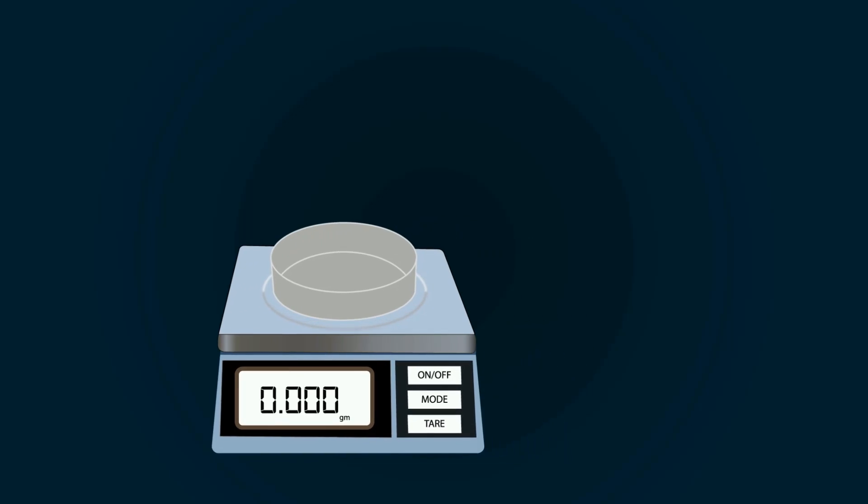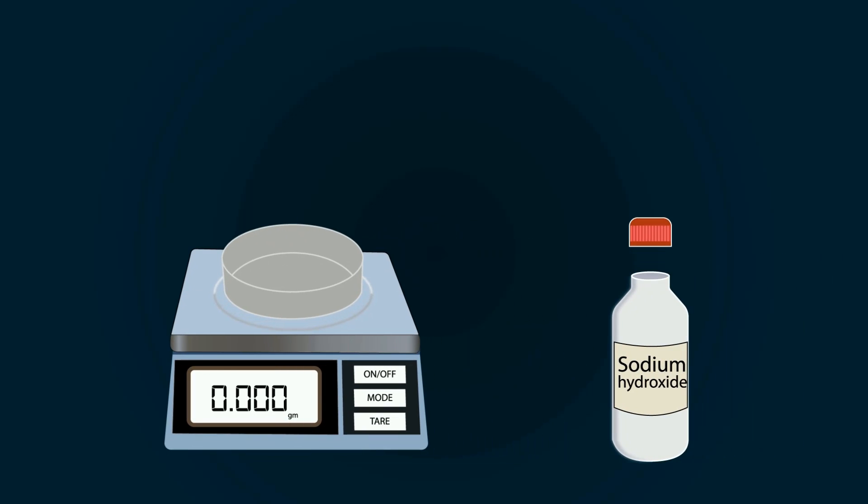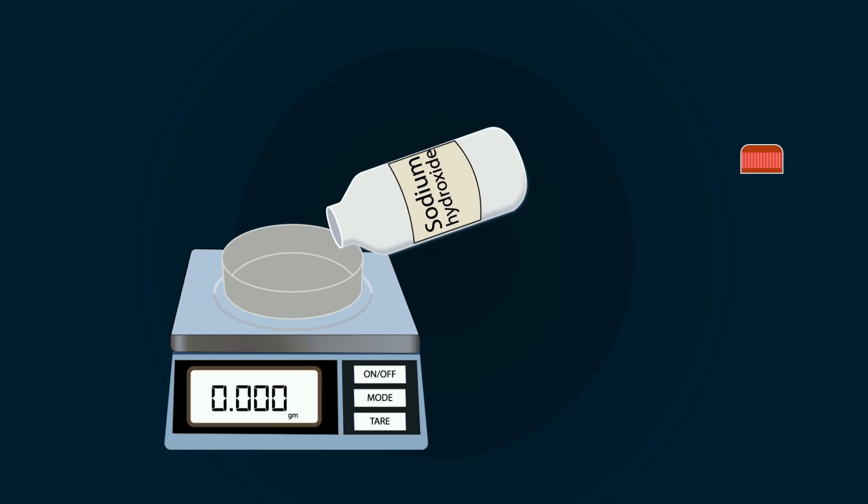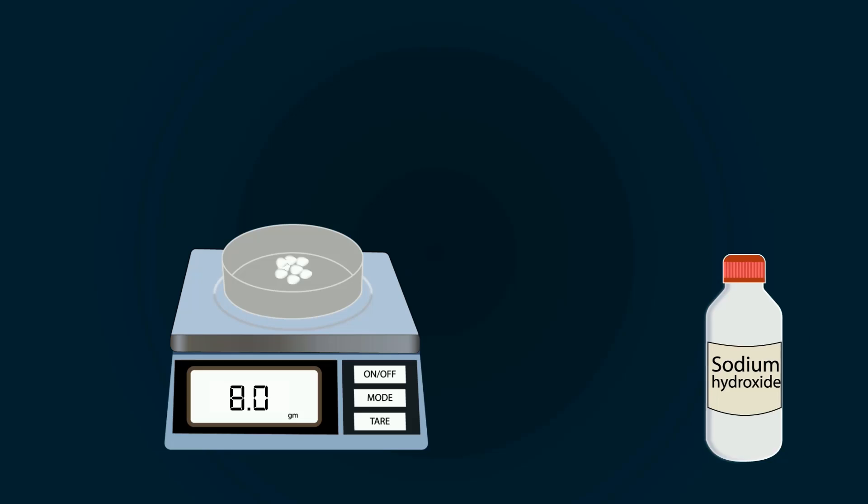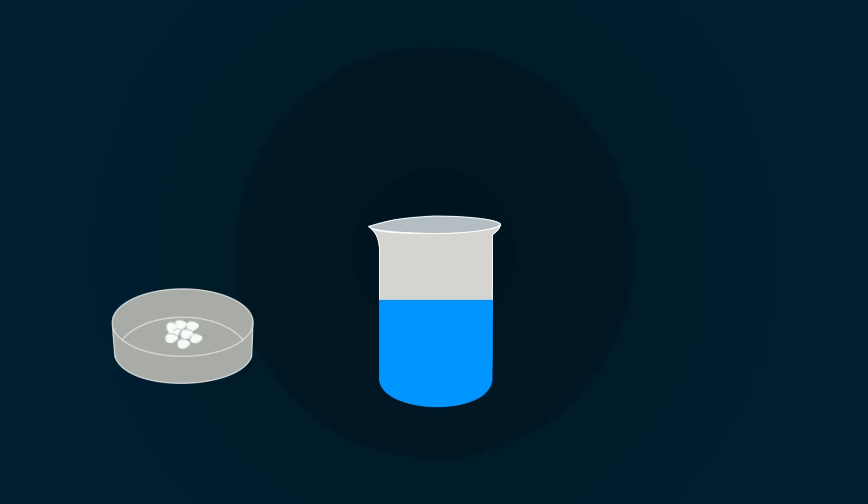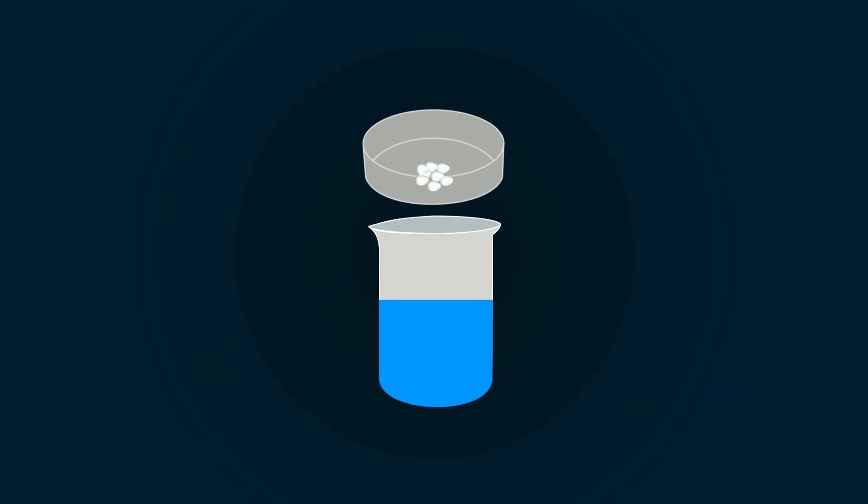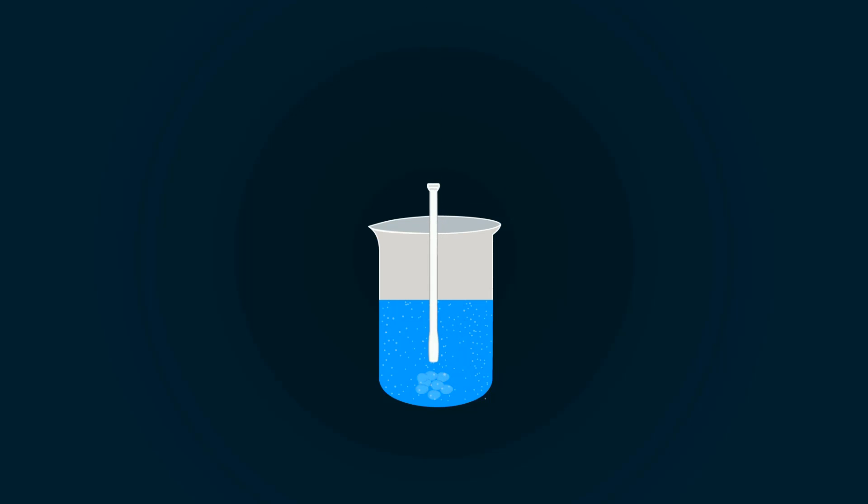Now add sodium hydroxide into the petri dish and measure it up to 8 grams. Add this into the distilled water. Now stir the solution to make a homogeneous mixture of sodium hydroxide.